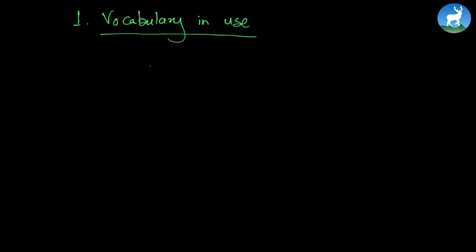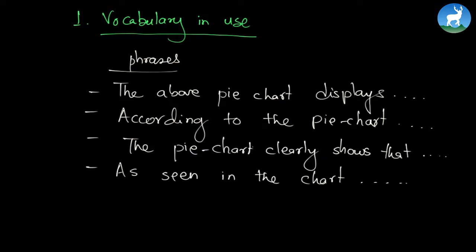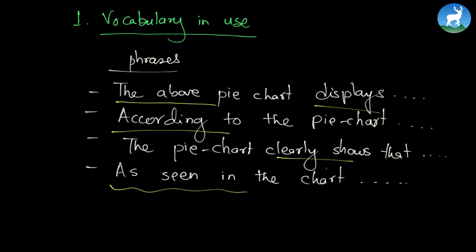Now let us start the exercise portion. The first thing we have is called vocabulary in use. We are going to understand the basic type of phrases used to explain any kind of pie chart. The simple ones are: 'the above pie chart displays,' 'according to the pie chart,' 'the pie chart clearly shows,' and 'as seen in the chart.' These are phrases we commonly use while explaining a pie chart.